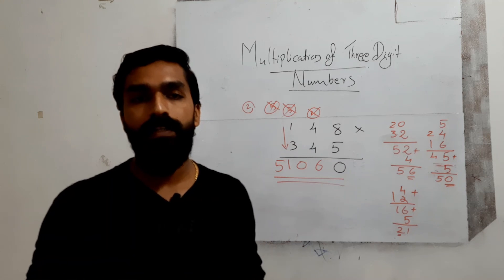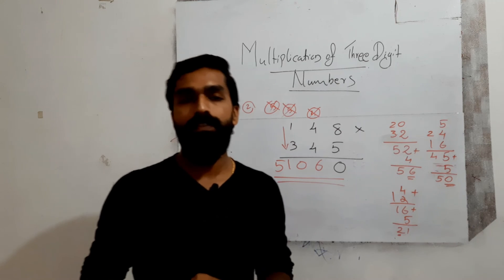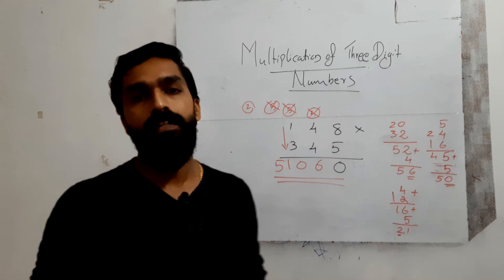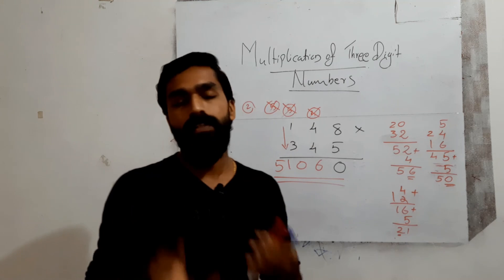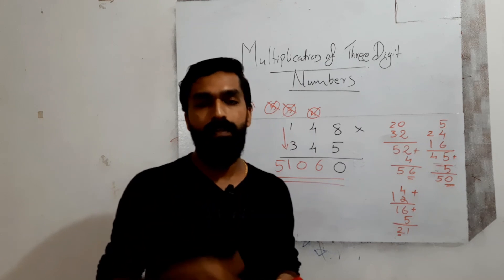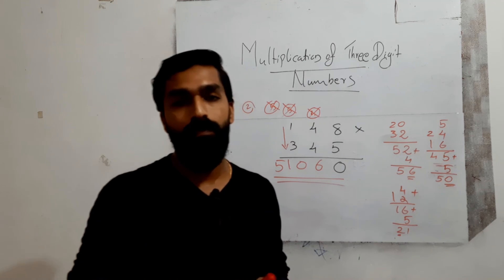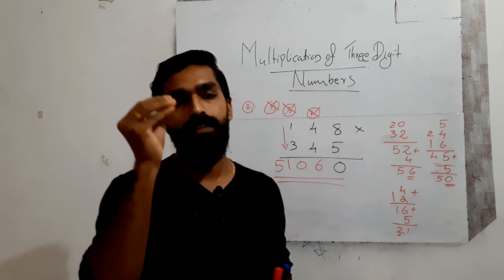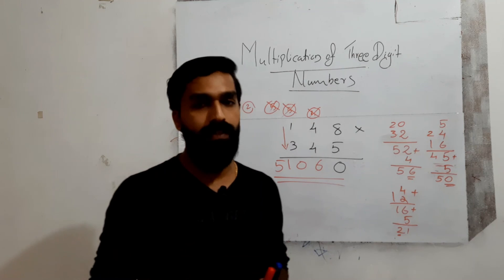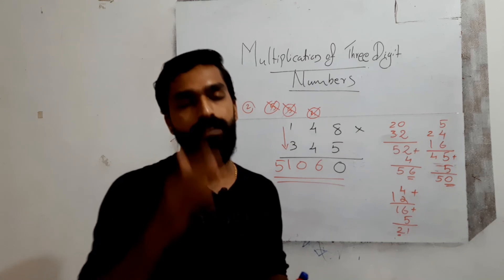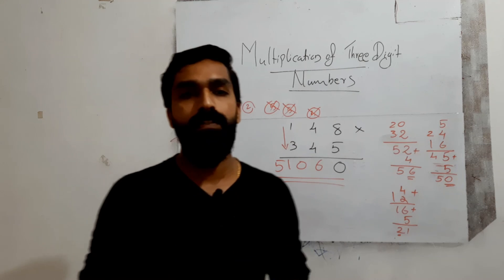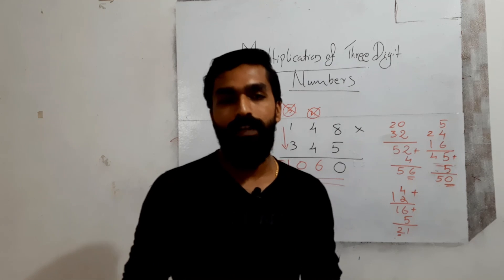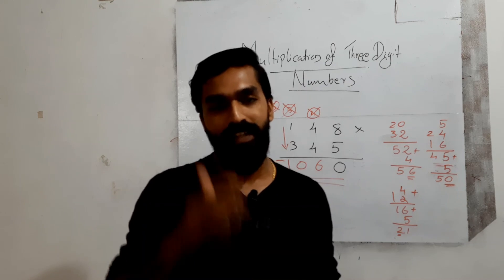That's the multiplication trick for three-digit numbers. Just practice it — take some other numbers, multiply them at home, and you will get the idea of how to get the answer within seconds. It is a very easy and helpful method. We will see you in the next video — till then, bye!